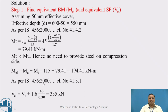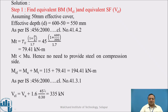As per IS 456-2000 clause 41.3.1, we find the equivalent shear force VEL. VEL is equal to VU plus 1.6 times the torsional moment divided by breadth. Here TU is 45, so 45 divided by 0.3, and VEL works out to be 335 kN.